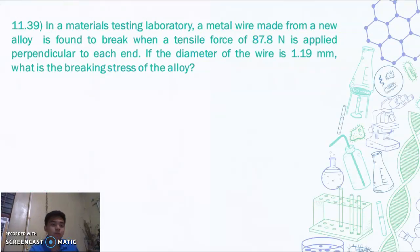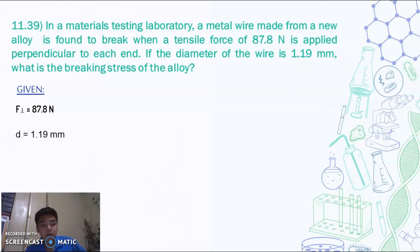So for our last problem. In a materials testing laboratory, a metal wire made from a new alloy is found to break when a tensile force of 87.8 Newton is applied perpendicular to each end. If the diameter of the wire is 1.19 millimeters, what is the breaking stress of the alloy? So we have a given of the perpendicular force of 87.8 Newton, a diameter of 1.19 millimeter, and we are looking for the stress. It is a metal wire, so it will give us an idea about what's used later.